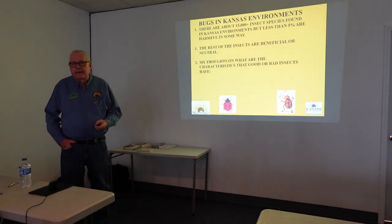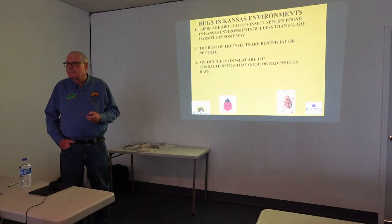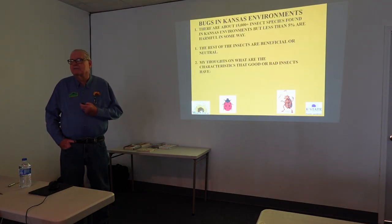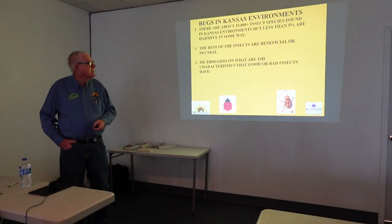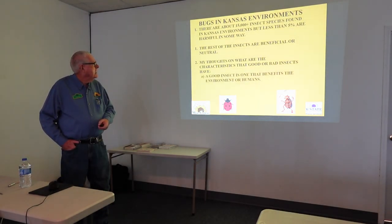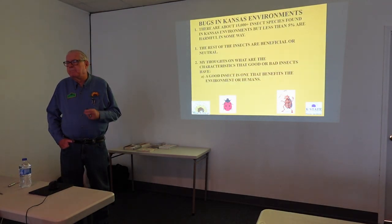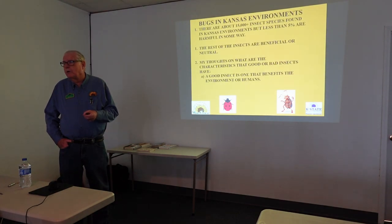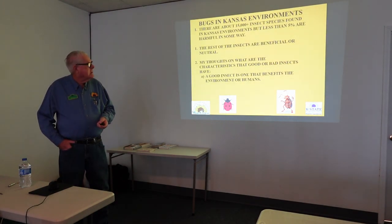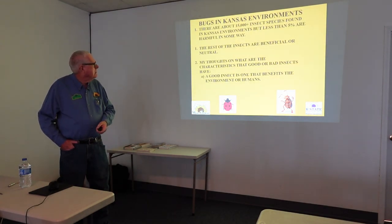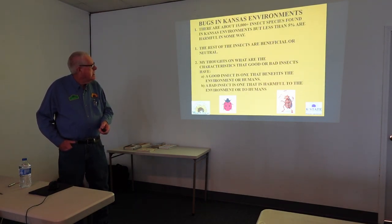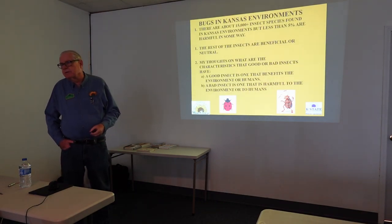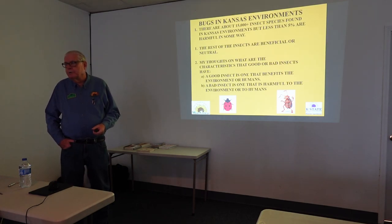There are about 15,000 plus species of insects in Kansas, and less than 5% are harmful in some manner. The rest of the insects are all beneficial or neutral. A good insect is one that benefits the environment or humans. A bad insect is just the opposite — it's harmful to the environment or to humans.